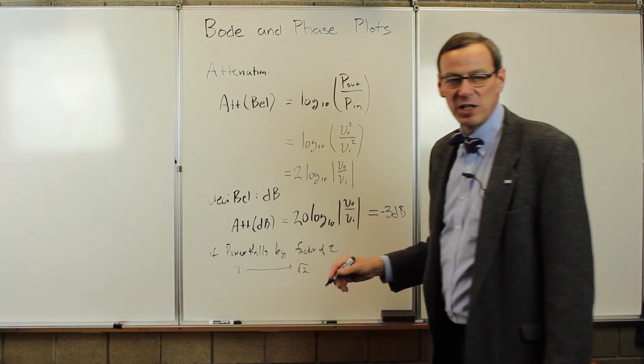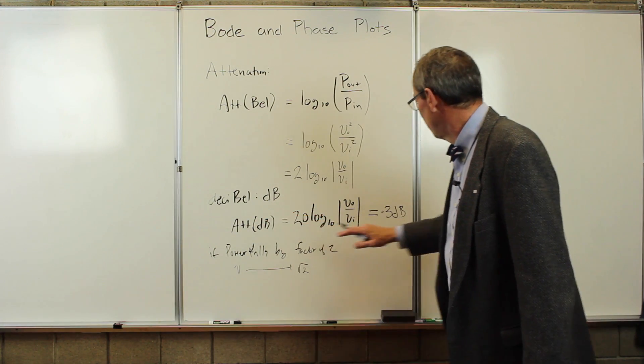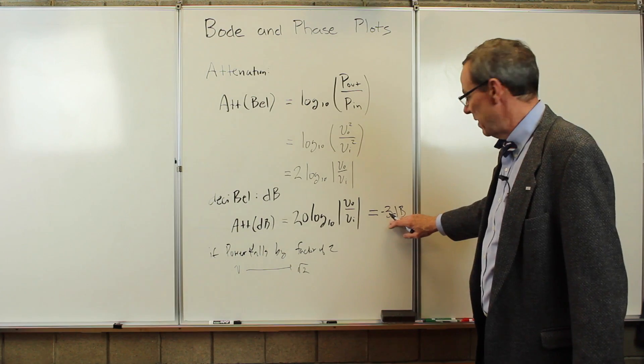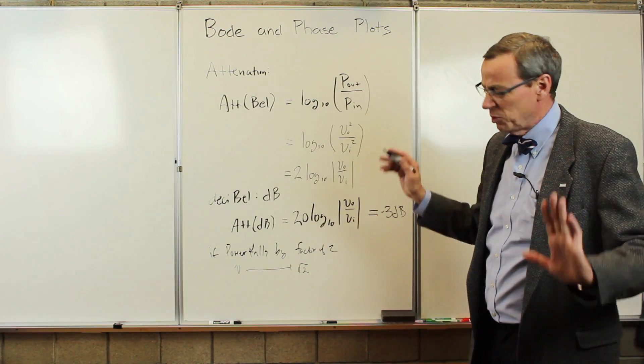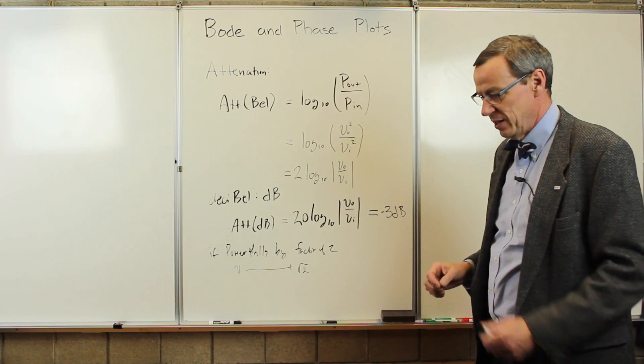So on an attenuation plot, if the attenuation falls by three dB, it means the power has fallen by a factor of two. And that's sort of a relevant reference point for things here.